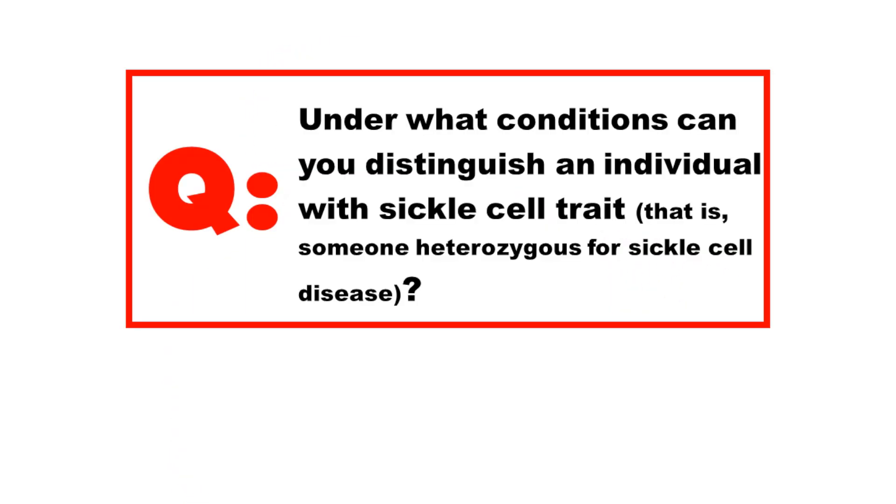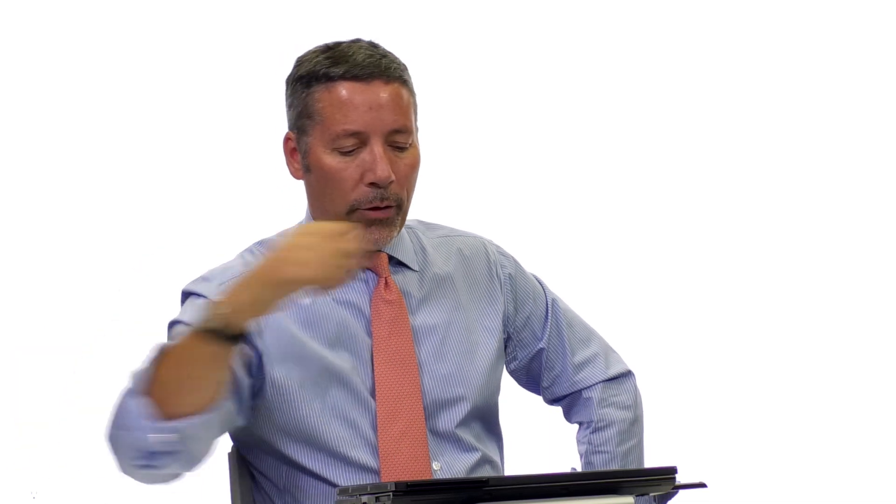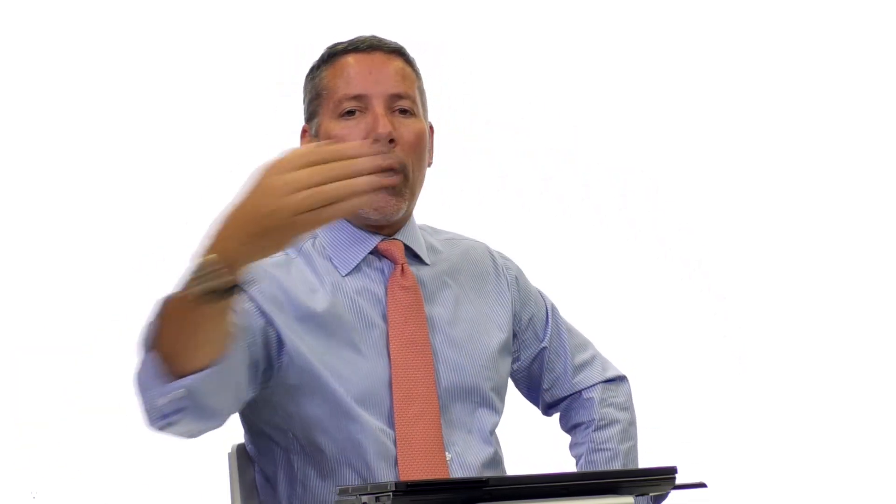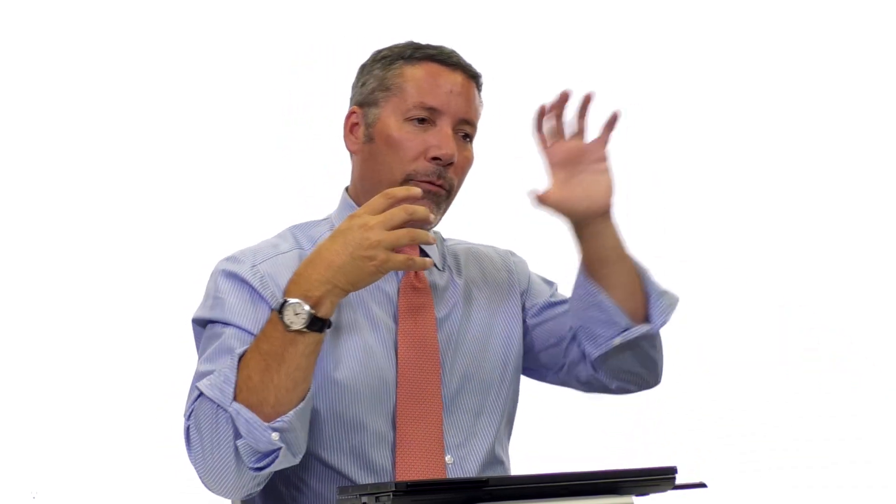A person with sickle cell trait — meaning a carrier, HbA/HbS, heterozygous — won't always show symptoms, but in some cases they will, depending on what percentage of their blood cells are sickling and under what conditions. We define codominance as a situation where, like incomplete dominance, the heterozygous phenotype differs from the homozygotes — but in this case it has characteristics from both of the other phenotypes. You have something from the sickling allele and something from the non-sickling allele, and both are visible.